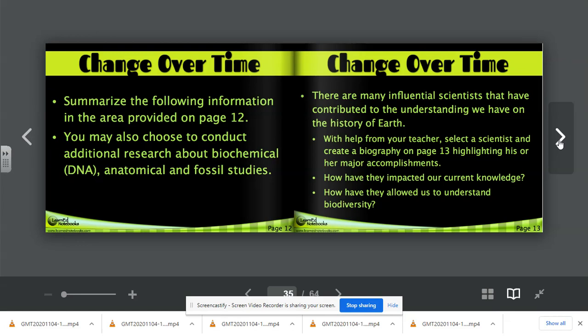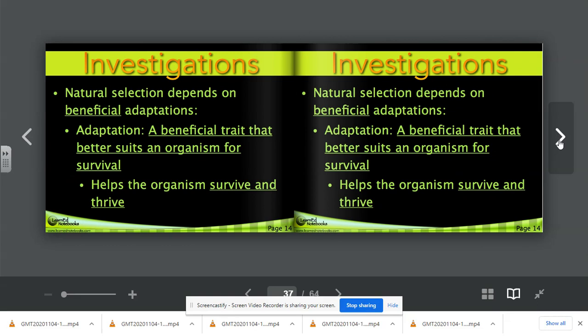There are many influential scientists that have contributed to the understanding we have on the history of Earth. With my help, we're going to be talking about Charles Darwin. And we're going to be working on his biography on page thirteen together in class. So don't worry about doing it on your own. It is perfectly acceptable to fill out under name Charles Darwin and then leave the rest of it blank in anticipation that we will do this together during class.